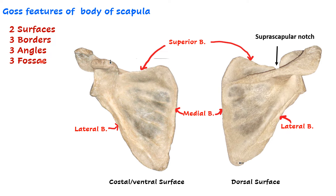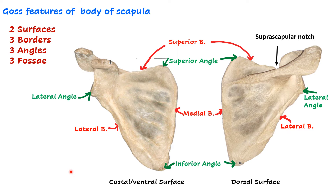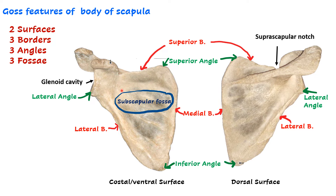There are three angles. The first is the superior angle, then the inferior angle, and also the lateral angle. At the lateral angle we have a pear-shaped shallow cavity known as the glenoid cavity, which articulates with the head of the humerus to form the shoulder joint or glenohumeral joint — a ball and socket joint. There are also three fossae: the subscapular fossa on the ventral aspect, and on the dorsal aspect — because of the spine — we have the supraspinous fossa above the spine and the infraspinous fossa below it.